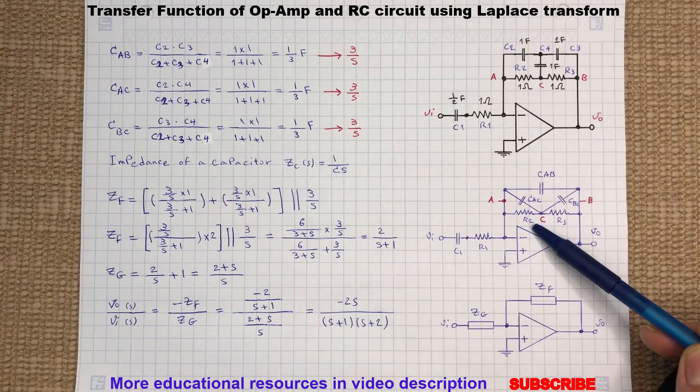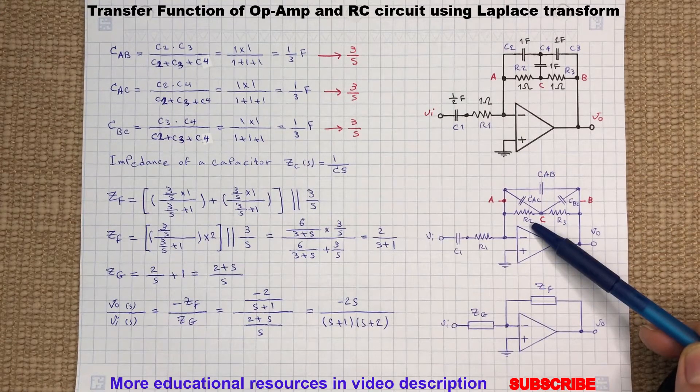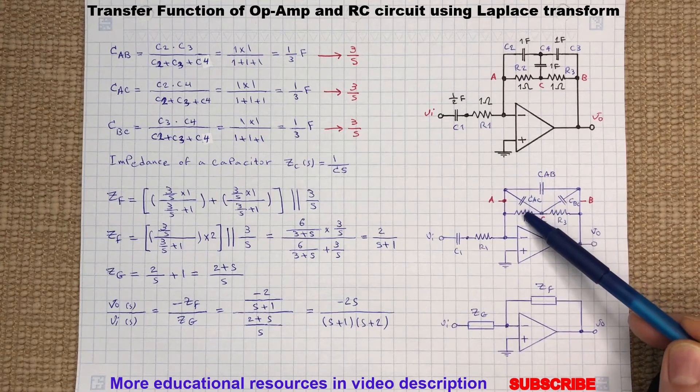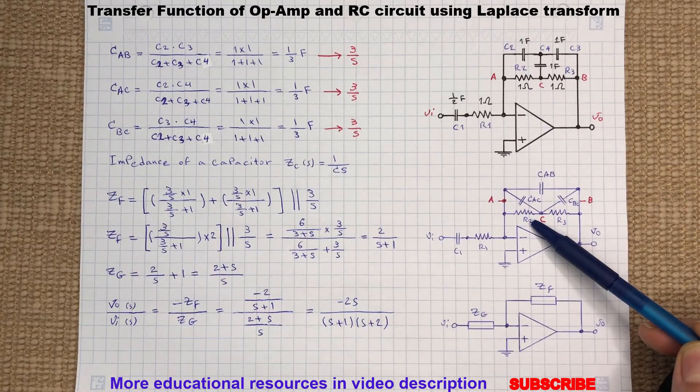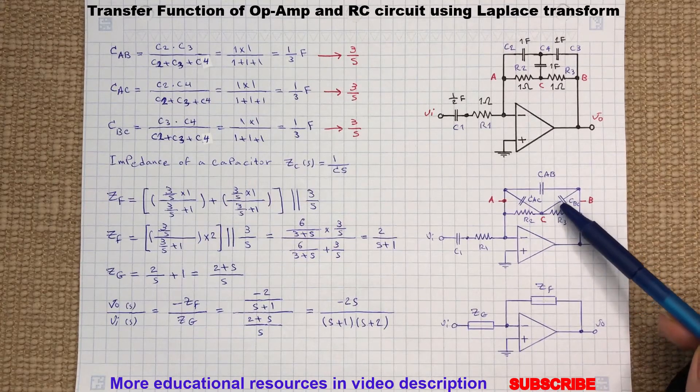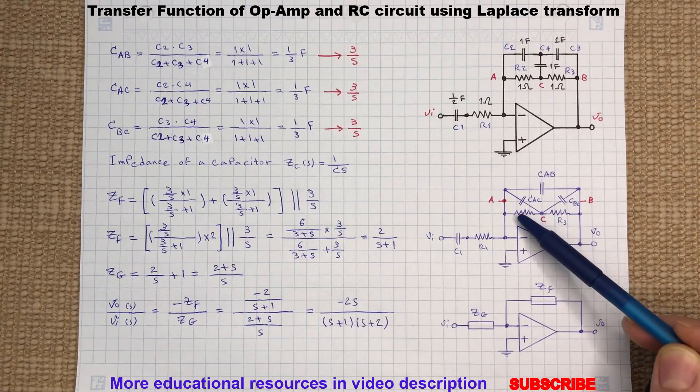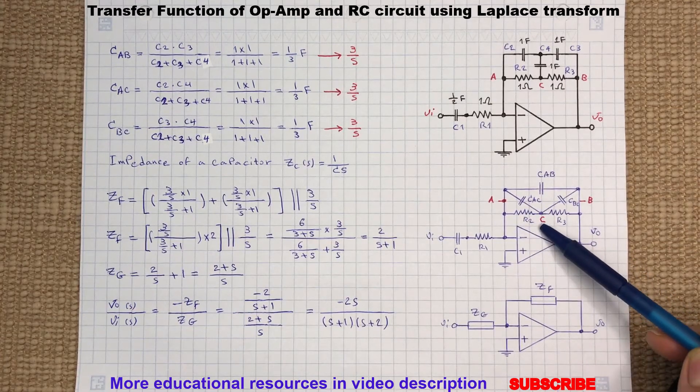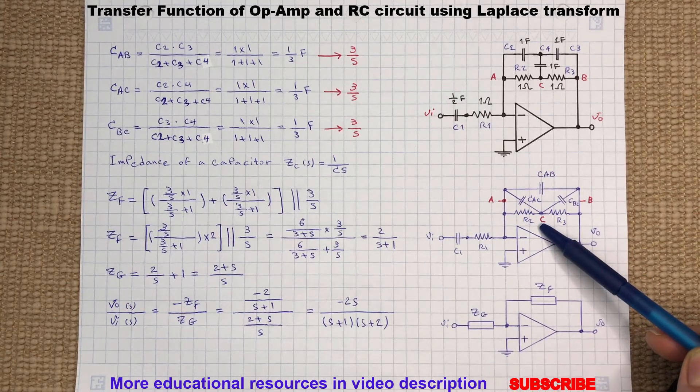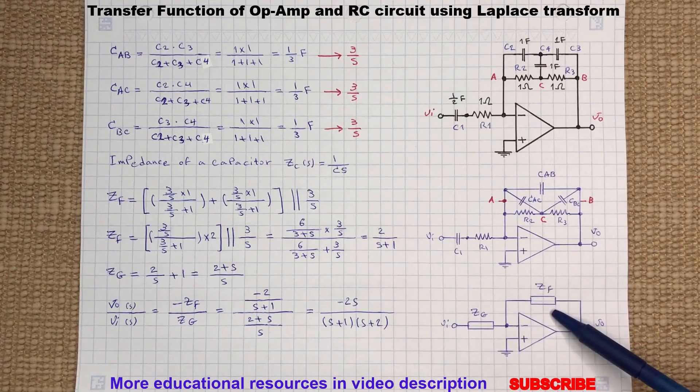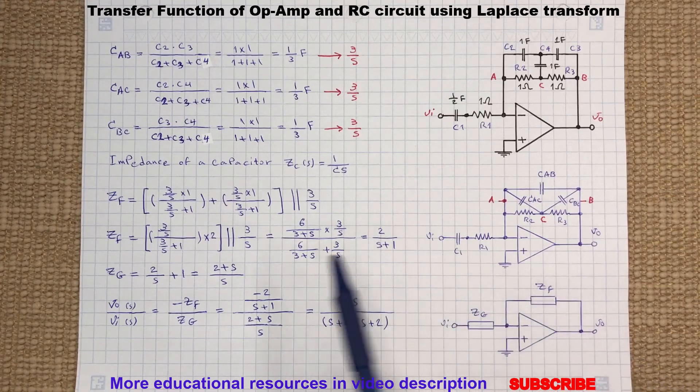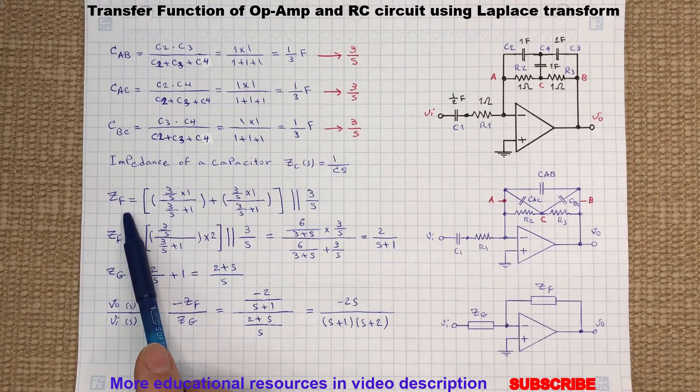As you can see here, CAC is in parallel with R2 and also CBC is in parallel with R3, and both of them are in series, and they both are in parallel with CAB. So we can call this feedback impedance ZF and here is how we can calculate this impedance.